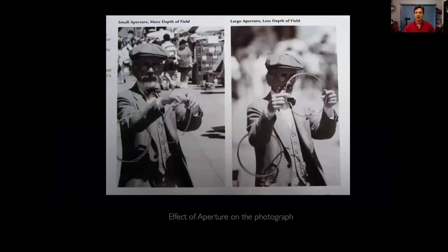We can also define depth of field as the area of acceptable sharpness — the area of the image that is in acceptable sharpness, or what we would call in focus. Here's another visual example showing the effect of aperture on a photograph of a street performer with rings. On the left, a very small aperture gives more depth of field, so we can clearly see the street scene behind the performer. On the right, a large aperture with shallow depth of field keeps focus just on the performer, and the background behind him is just a sense of environment with no discernible details. You can control which of these situations you prefer by choosing the aperture you'd like.